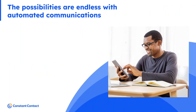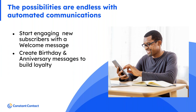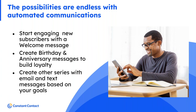As you start thinking about which automated messages to set up, you can use email and/or text messages to reach people in the channels they prefer. Start engaging subscribers right away with a welcome email or series when they're most engaged. After that, think about other automations to build loyalty and celebrate milestones like birthdays and anniversaries. Then create other email and text message series based on your goals — like a nurturing series, onboarding, or building anticipation.